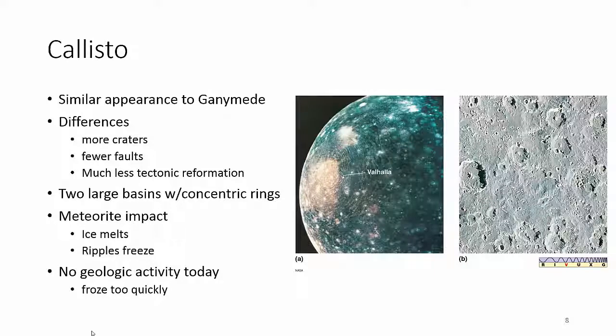Callisto looks very similar to Ganymede, but it has more craters and fewer faults, so they think there's less tectonic activity. What's really interesting is a large impact crater — you can see a big yellow spot with ripples radiating outward. A meteor hit it, created a crater, and the impact caused things to start melting. Just like dropping a rock in a pond creates ripples, the impact created ripples — and then it froze while the ripples were still forming. So the ripples froze in place.